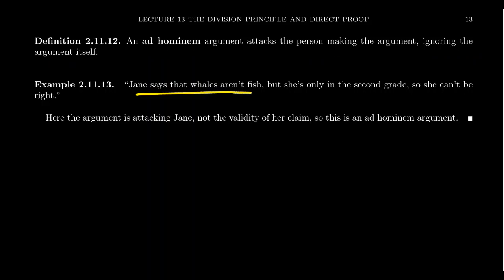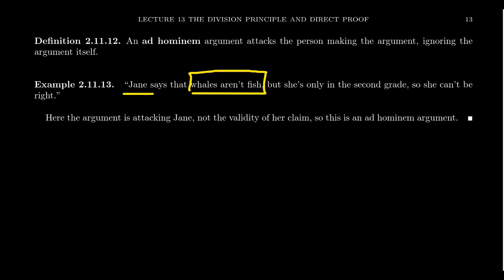For example: Jane says that whales aren't fish, but she's only in the second grade, so she can't be right. This argument is not attacking whether whales are fish or not — which is actually a true statement — it's attacking Jane because she's only in the second grade. What does she know about zoology? You're discrediting her credentials, and therefore we can discount what she says because maybe her credentials aren't good enough. We're not attacking the argument here.